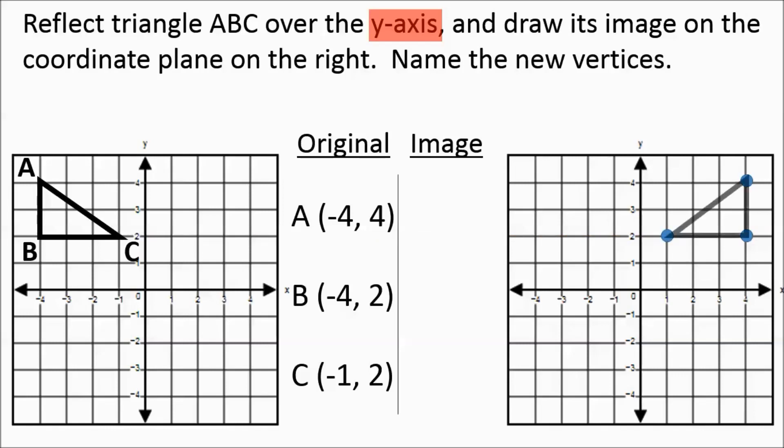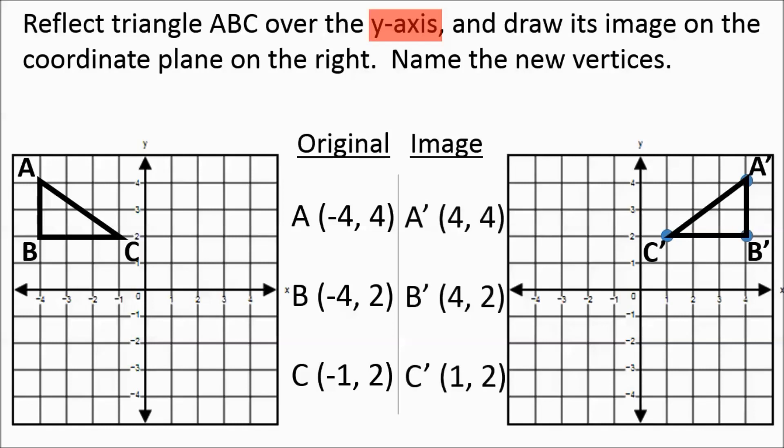So that's our new triangle. We're going to label it A', B', C' — we put these little apostrophes after it because that shows it's just the image of the original picture. We're going to name those new vertices.